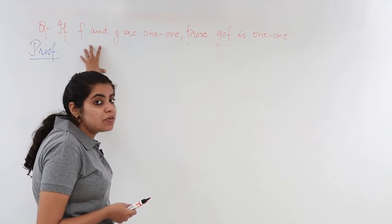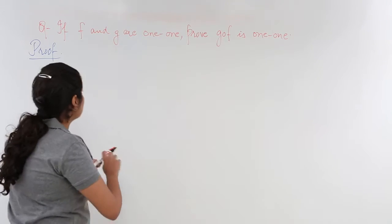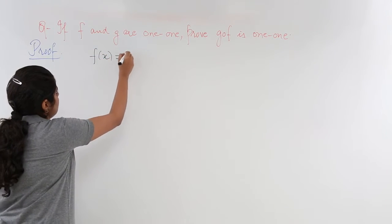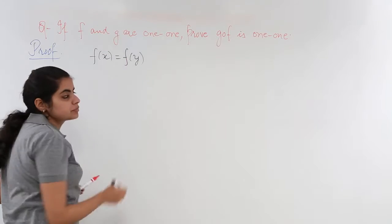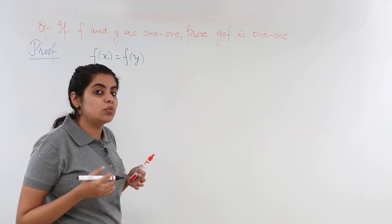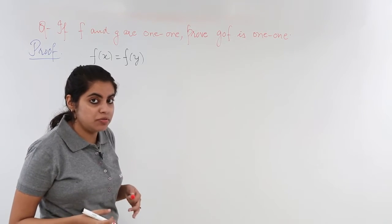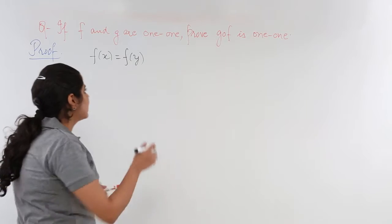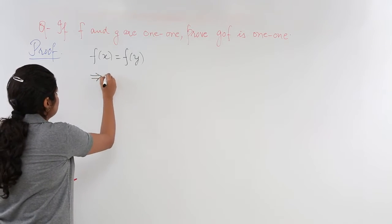The question tells me that f is a one-one function. So if f is one-one function, we have f(x) equal to f(y). Why? Because f is given to me as one-one, and if f(x) is equal to f(y) and the function is one-one, that implies x is equal to y.